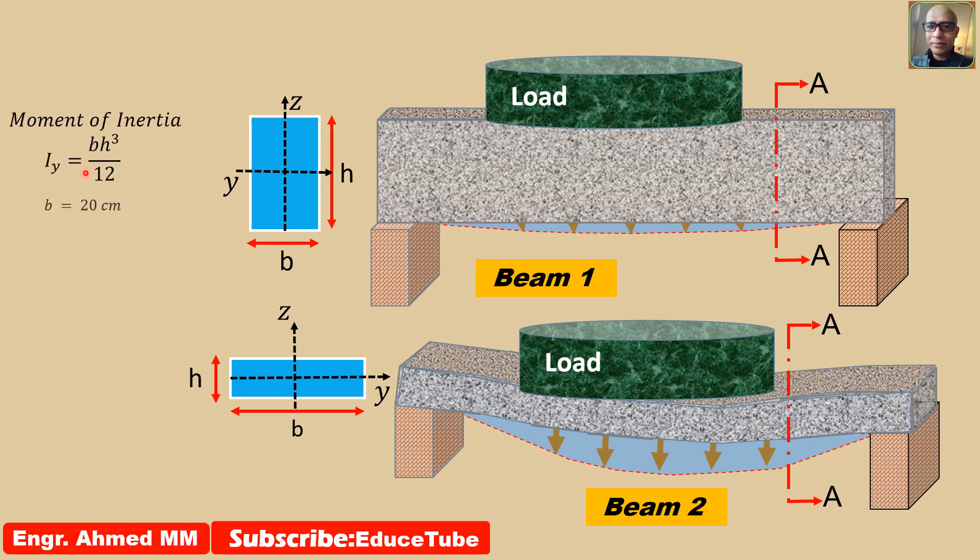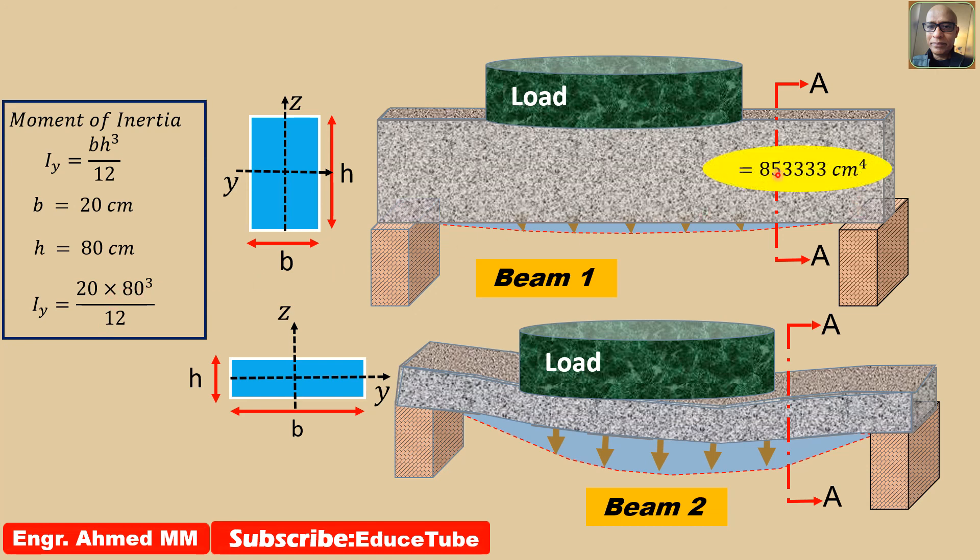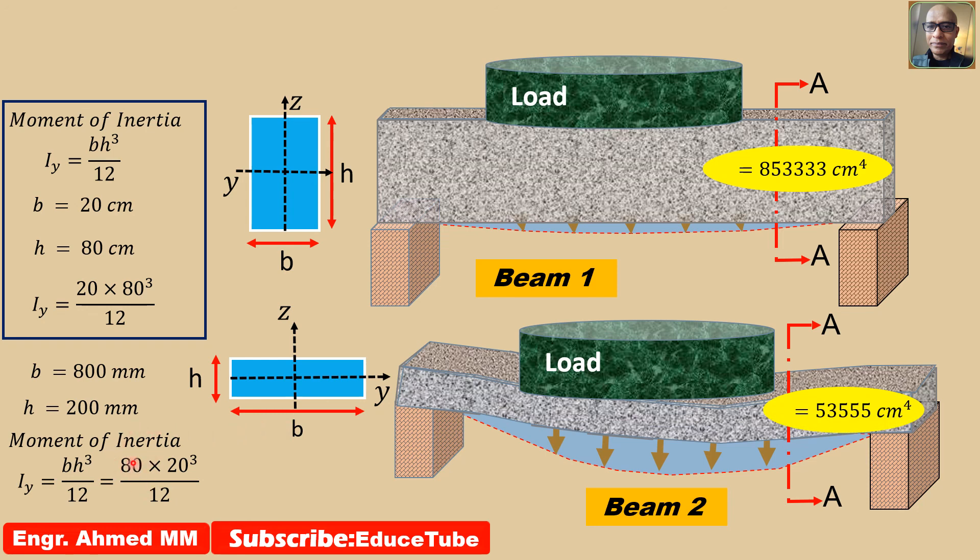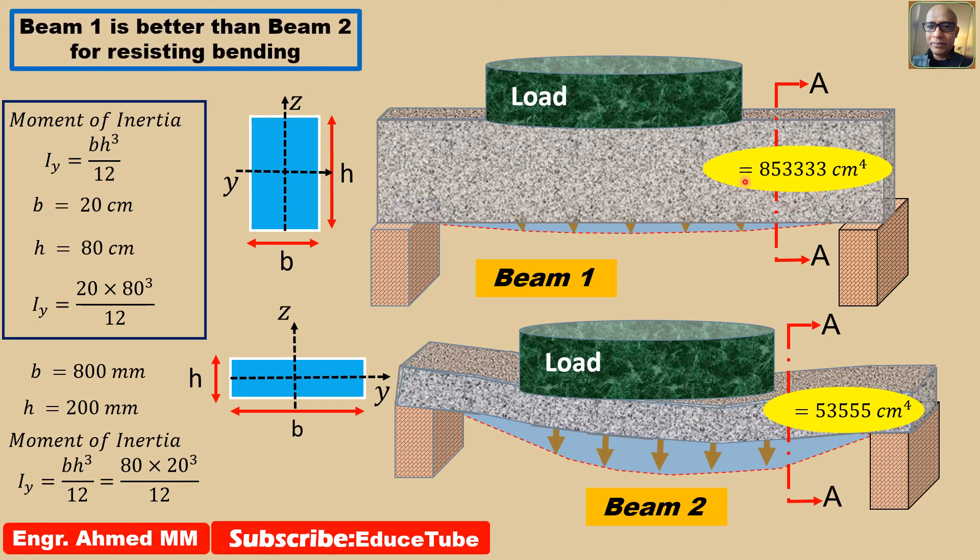If we use Iy equals bh cubed by 12, our result appears as 853,000 cm to the power 4. But for this section, as I told height is less than b, so surely the value will be less. It is only 53,000. 16 times more this one having height greater than width. That is why I have written here beam 1 is better than beam 2 for resisting bending.